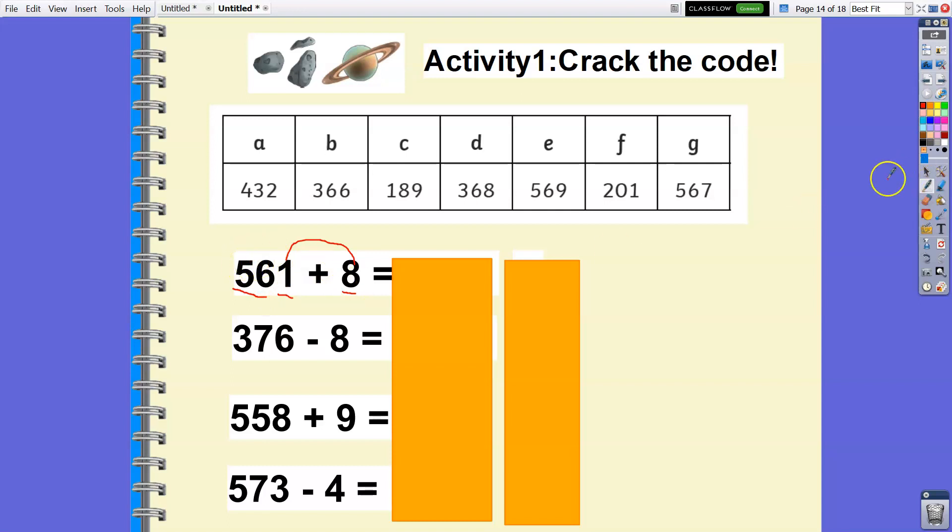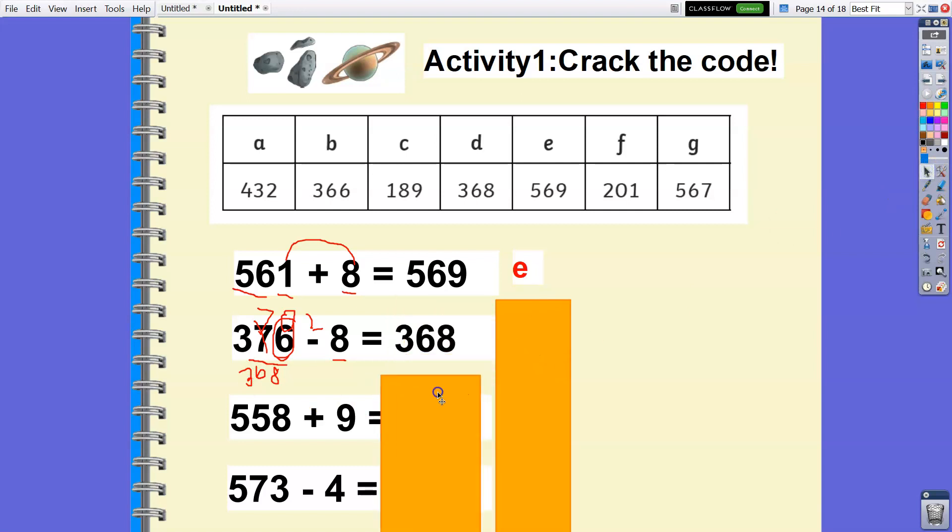For subtraction, we have 376 minus 8. But this number 6 is less than 8. You can think of the nearest number to 76 at the multiples of 10, that's going to be 70. Now it's easier: 70 minus 8 is 62, plus 6 is 68. Since you took 1 from 7, it becomes 6, so we have 368. Let's see if the answer is correct: letter D.